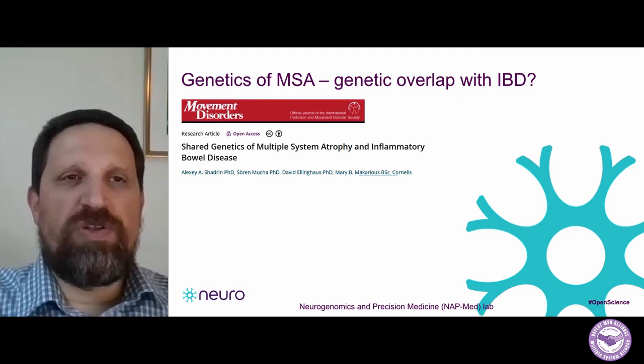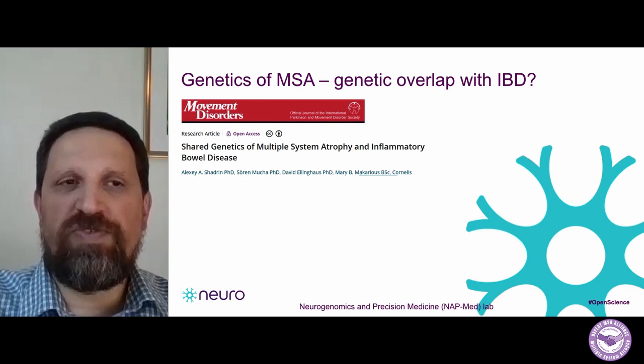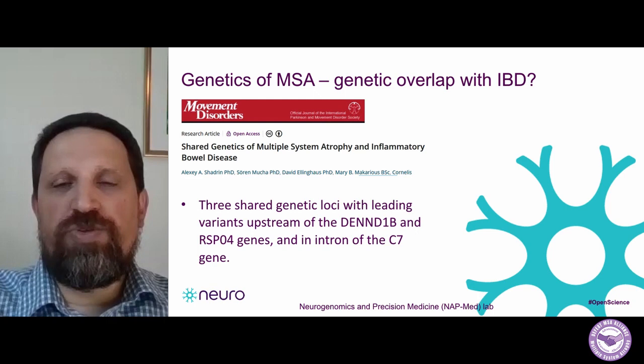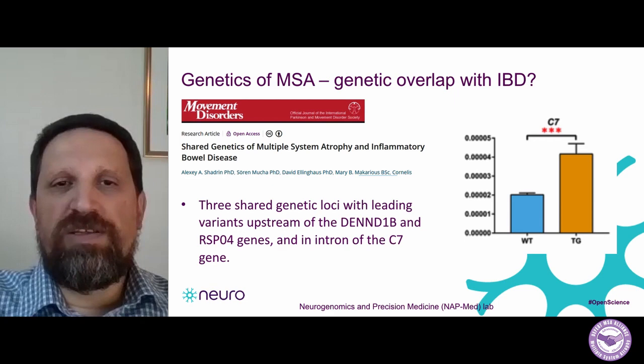One last thing about what we know about MSA genetics is this paper showing that there could be a shared genetic background for multiple system atrophy and inflammatory bowel disease. This paper found three genes potentially involved in both inflammatory bowel disease and multiple system atrophy — but again, this study must be replicated in a larger cohort.